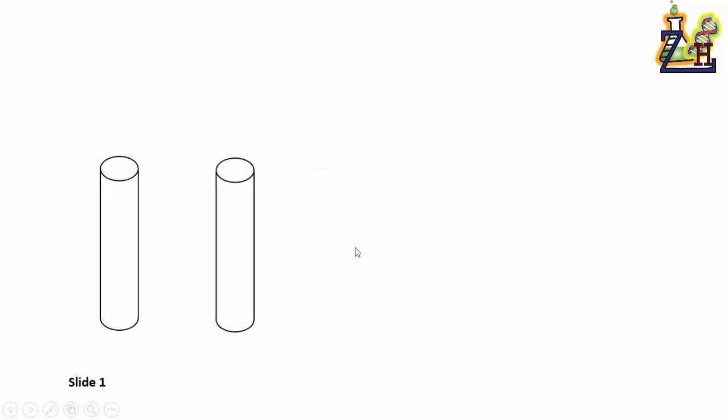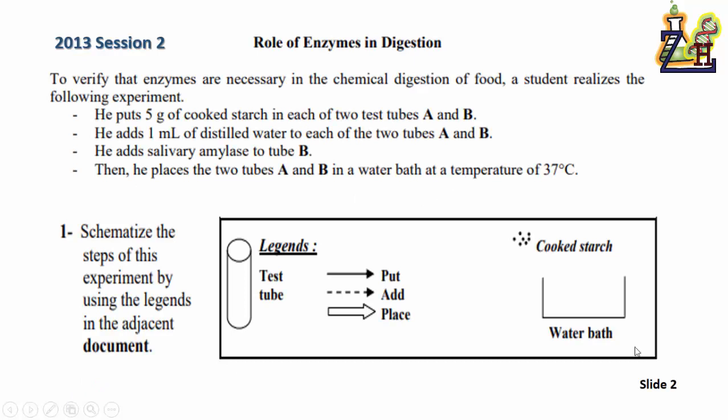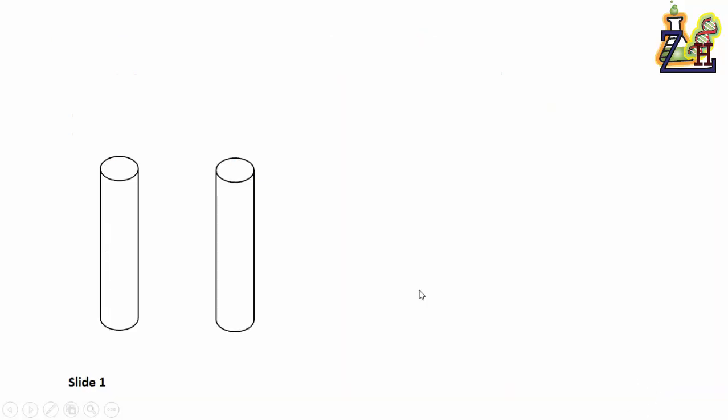First we start by drawing two test tubes because we have tubes A and B. Then we label them. They said we put 5 grams of cooked starch in both, so we have cooked starch.